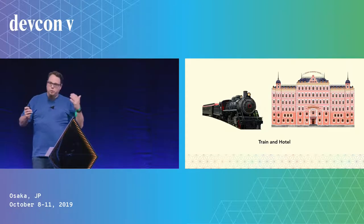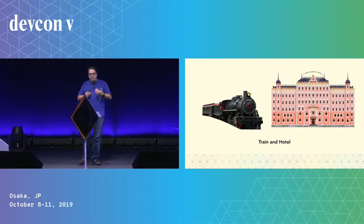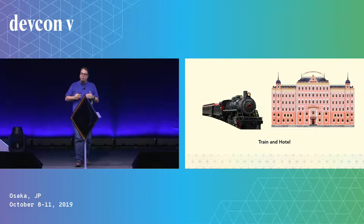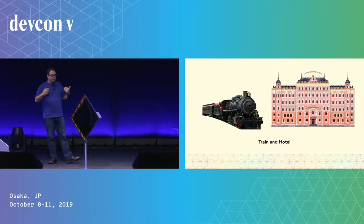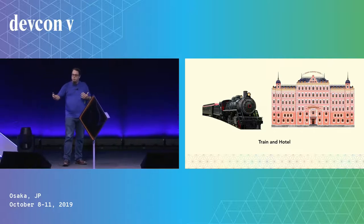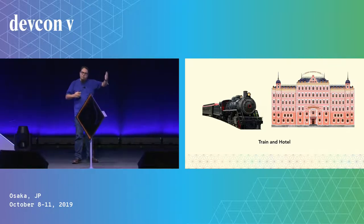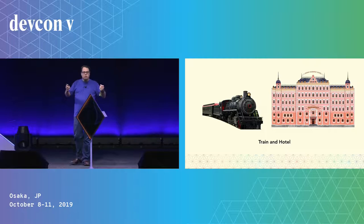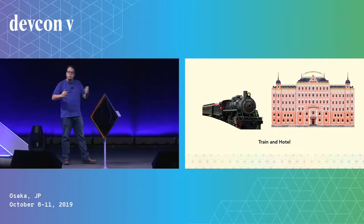There's a common one that comes up in the Ethereum community called the train and hotel problem. If you search on ETH researchers, there are great articles about solving it. It's fundamentally about asynchronous communications between smart contracts on different shards. The toy version says you're traveling to a city and need a train ticket to get there and a hotel room when you arrive. You don't want to pay for a train ticket until you've got a hotel room, but you don't want to book the hotel unless you can get a train ticket. If each is a smart contract on a different shard, how do you book both without ending up with one without the other?